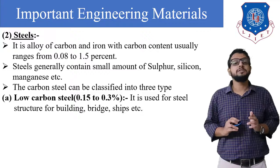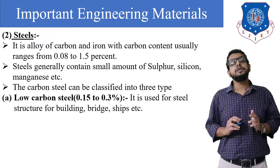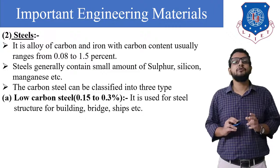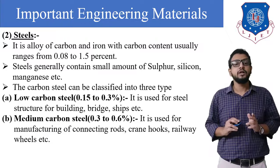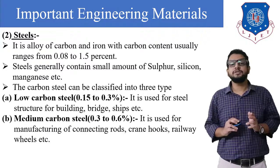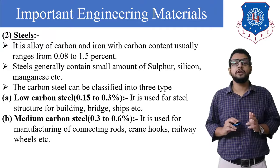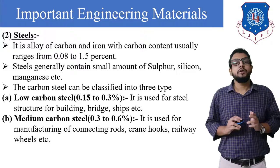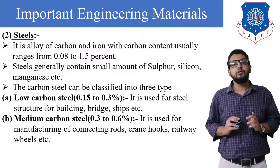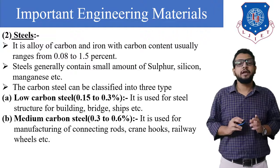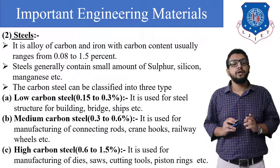The first type is low carbon steel, with 0.15 to 0.3% carbon content. It is used for steel structures for buildings, bridges, ships, etc. The second is medium carbon steel, with a carbon content of 0.3 to 0.6%. It is used for manufacturing connecting rods of IC engines, crankshafts, crane hooks, and railway wheels.